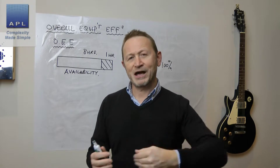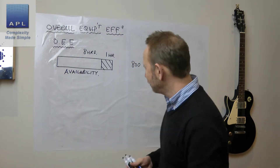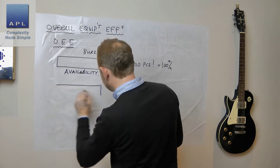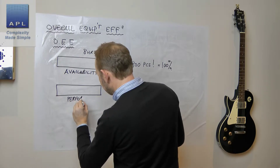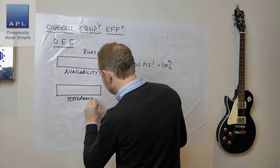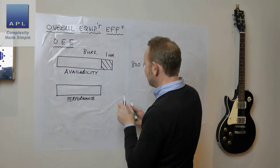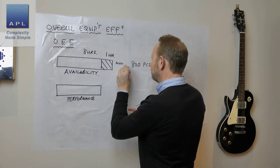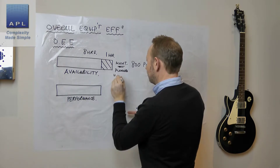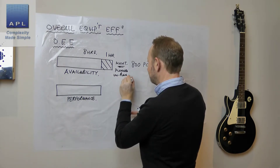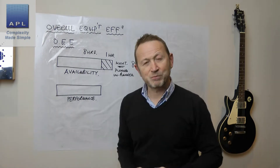Now we're going to ask the question: how well did we use the seven hours worth of available time on the machine? So we take the seven hours, and now this is about performance. All losses are going to be taken into account here. These are maintenance-type losses — planned and unplanned — where the green light isn't on. That relates to the maintenance process you're applying to your equipment.